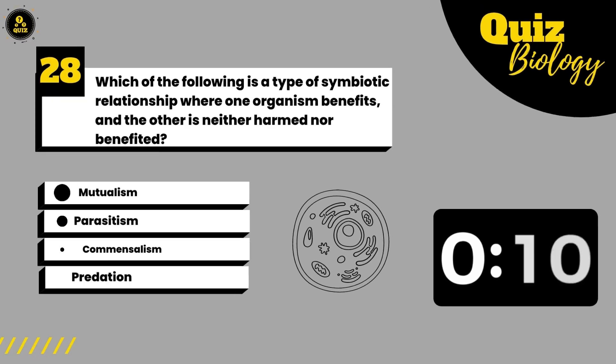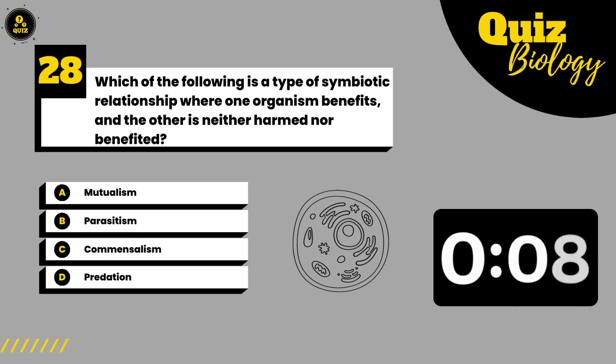Which of the following is a type of symbiotic relationship where one organism benefits and the other is neither harmed nor benefited?